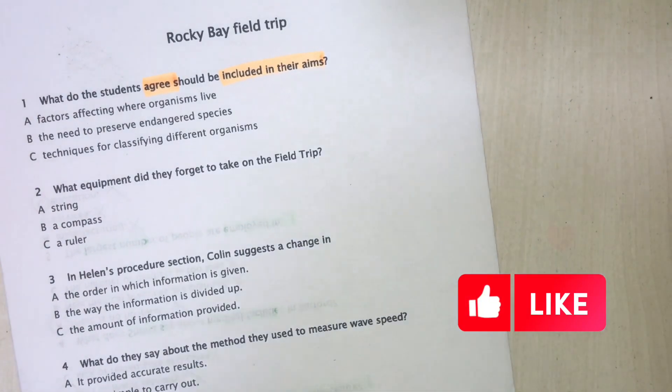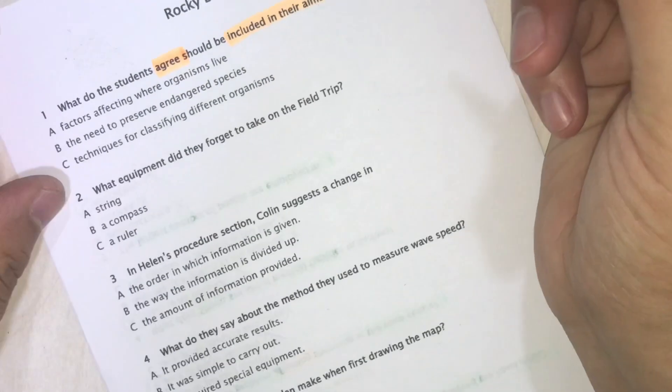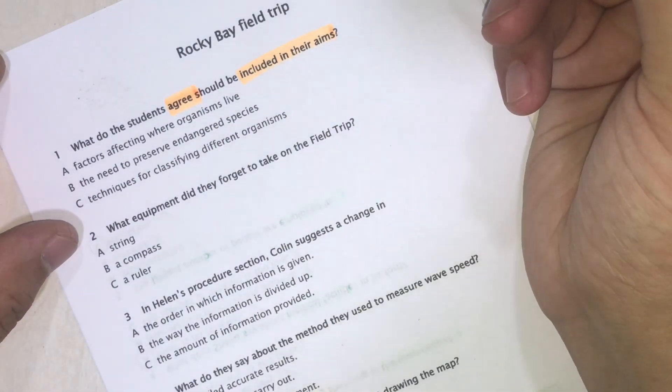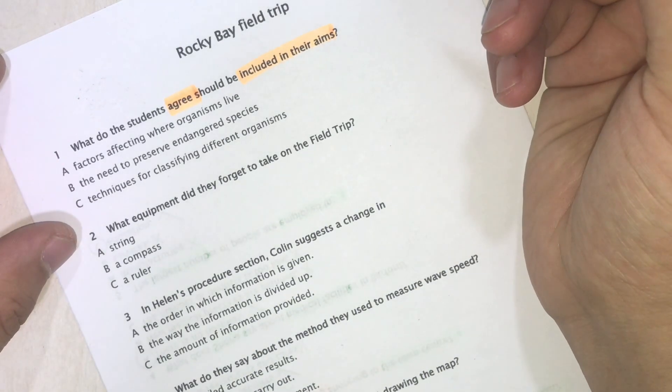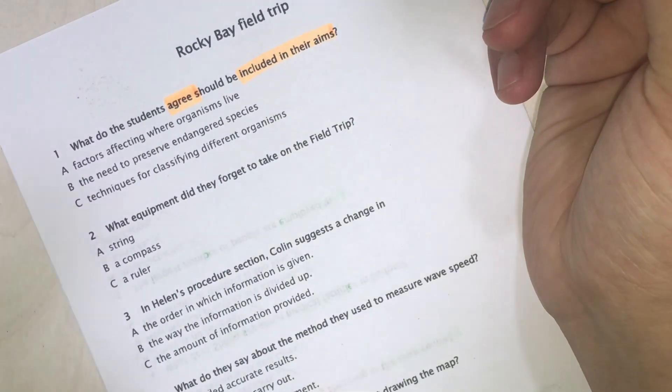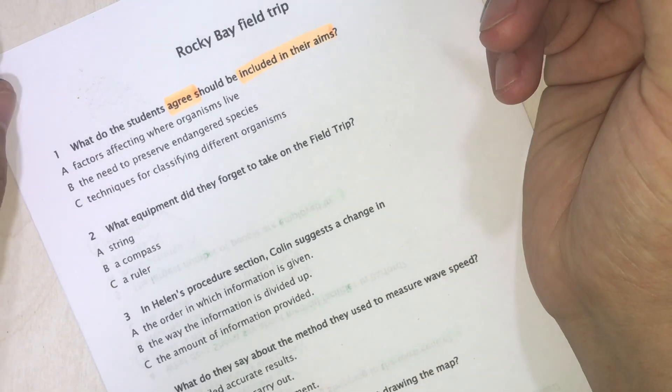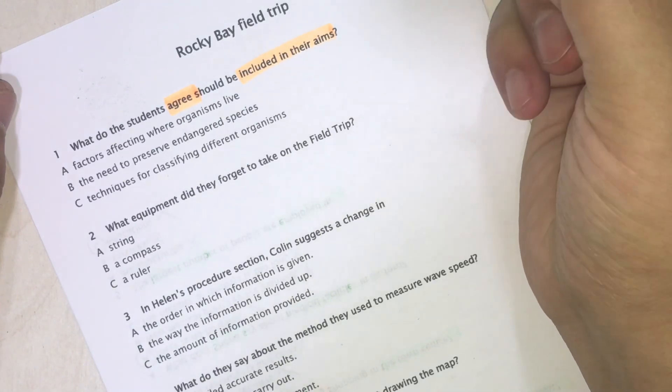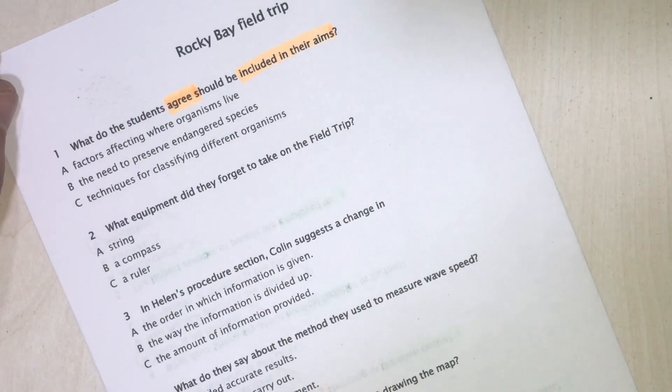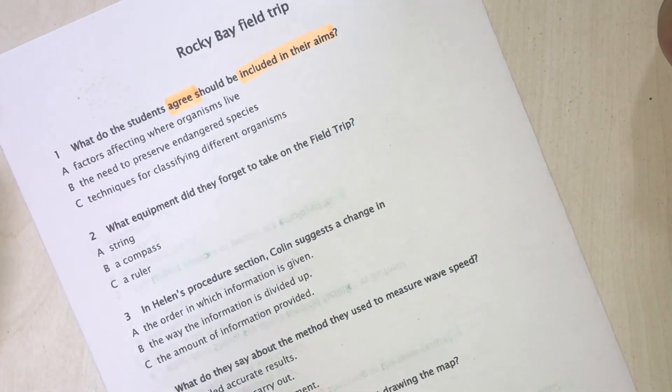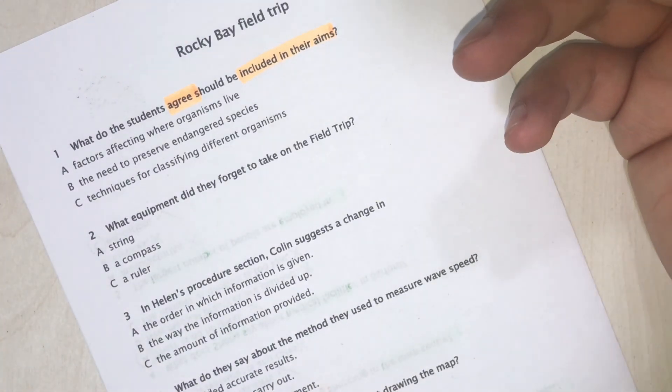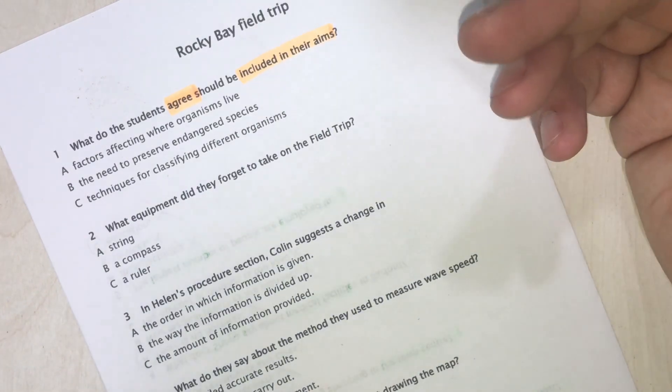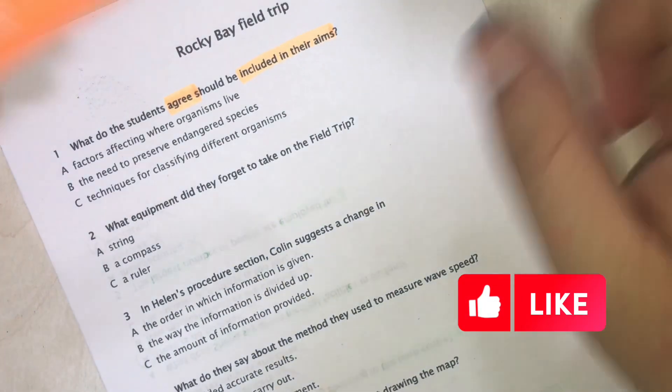The audio plays: 'I brought my notes on our biology field trip to Rocky Bay, Colin, so we can work on our report.' 'Let's look at the aims of the trip first.' 'I just put something about getting experience of different procedures, but we need something about what causes different organisms to choose particular habitats.' 'I agree.' As you can see, they discussed preserving endangered species, but the guy said we need to talk about factors affecting where organisms live, and she said she agrees.